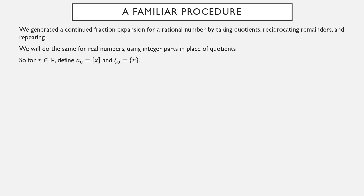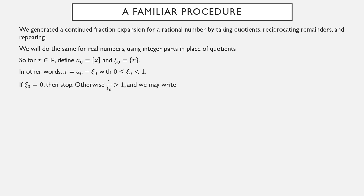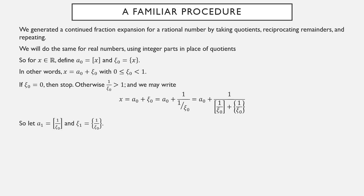We're going to do a pretty familiar procedure. We generated continued fraction expansions of rational numbers by taking quotients, then reciprocating remainders and repeating until we had a remainder of zero. We'll do the same for real numbers using integer parts in place of quotients. For a real number x, define a₀ to be its integer part and ξ₀ to be its fractional part. If that fractional part is zero, stop; otherwise one over it is bigger than one, and then we can take its integer part and fractional part, call that a₁ and ξ₁, and keep going.